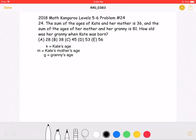Let K represent Kate's age, M represent Kate's mother's age, and G represent granny's age.